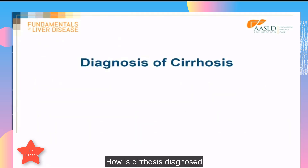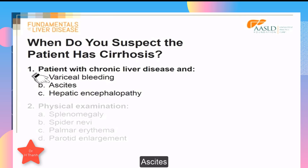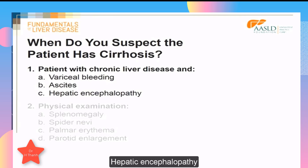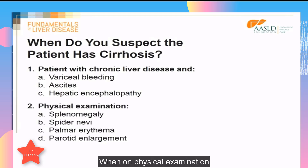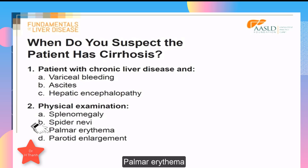How is cirrhosis diagnosed? Cirrhosis should be suspected in any patient who has variceal bleeding, ascites, or hepatic encephalopathy. Cirrhosis is also suspected in patients who on physical examination have splenomegaly, spider nevi, palmar erythema, and parotid enlargement.